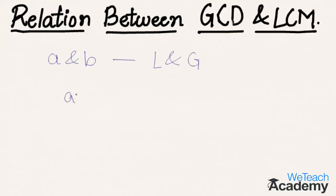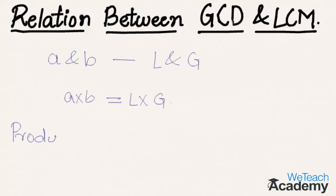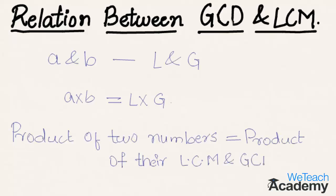Let us find the product of the given numbers, that is A × B, which will be equal to the product of their LCM and GCD, represented as L × G. So the relation between GCD and LCM is: the product of the given numbers equals the product of their LCM and GCD.